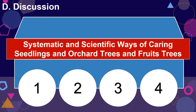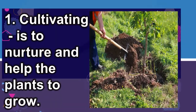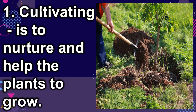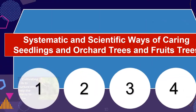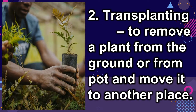Systematic and scientific ways of carrying seedlings and orchard trees and fruit trees. One: Cultivating — to nurture and help the plants to grow. Two: Transplanting — to remove a plant from the ground or from a pot and move it to another place.